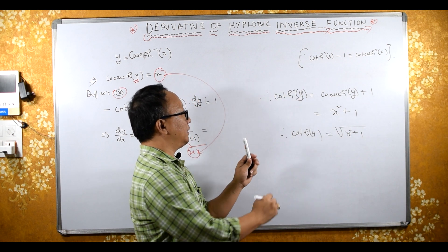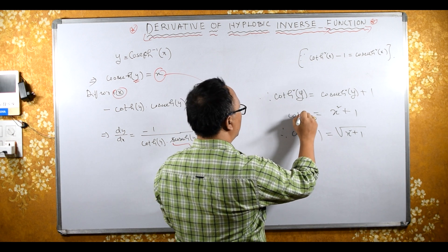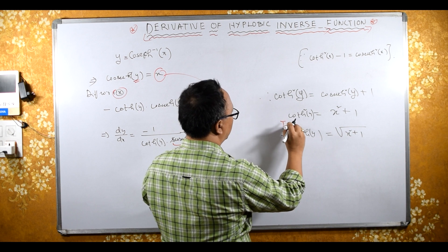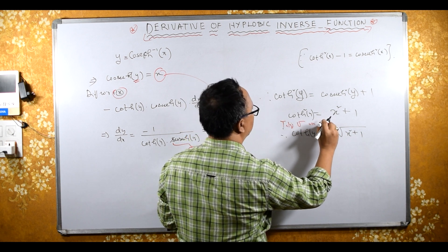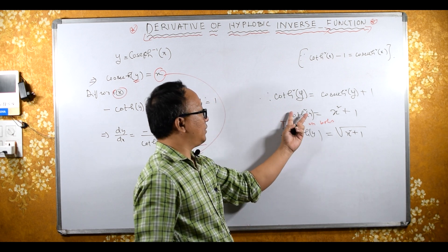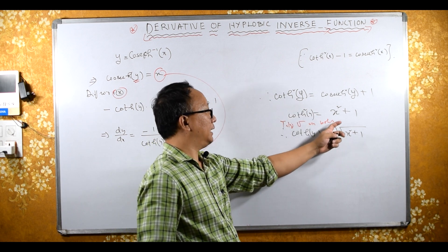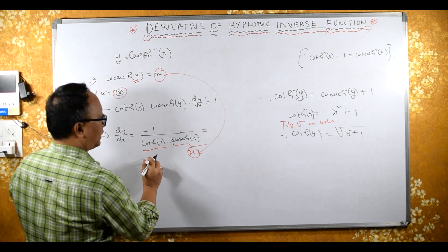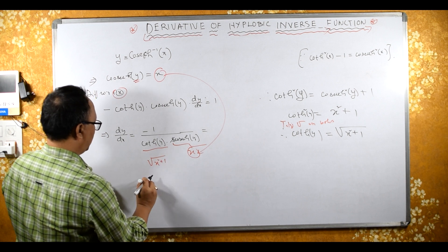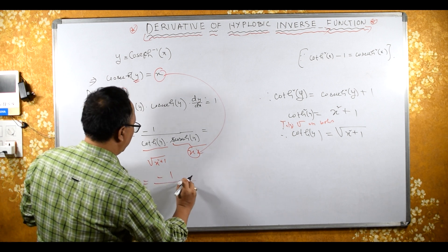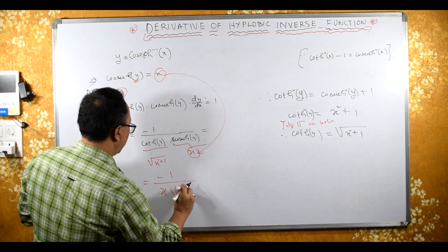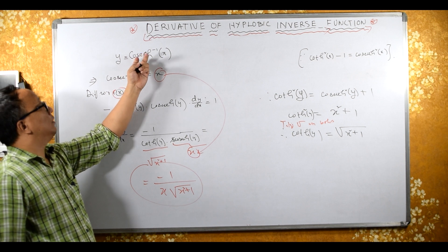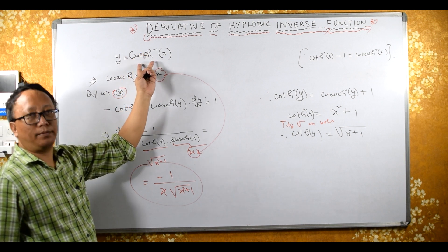Taking the square root on both sides, we get cot hyperbolic y equals square root of x squared plus 1. Therefore, substituting back, dy upon dx equals minus 1 upon x into square root of x squared plus 1. This is the derivative of cosec hyperbolic inverse x.